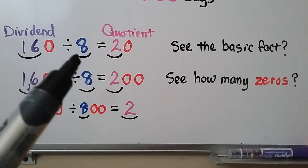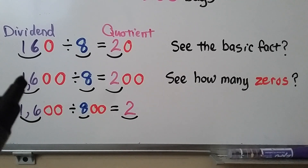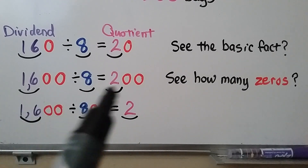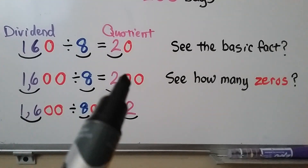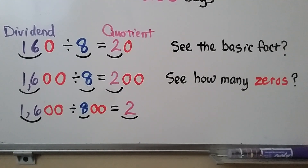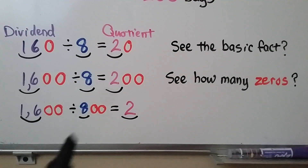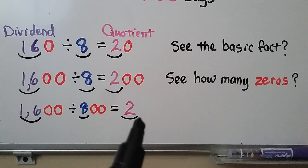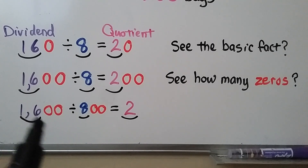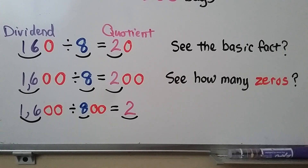So with 160 divided by 8, the basic fact is 16 divided by 8, giving a quotient of 2 with one zero — 20. With 1600 divided by 8, the basic fact is still 16 divided by 8 equals 2, and with two zeros in the dividend, we get two zeros in the quotient — 200. But be careful: this zero-counting rule only works when dividing by a one-digit number. For 1600 divided by 800, since there are zeros in the divisor too, the quotient is just 2.